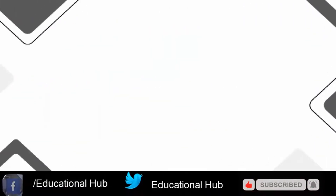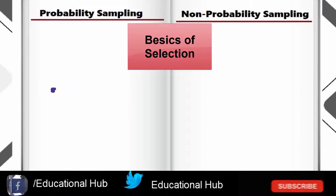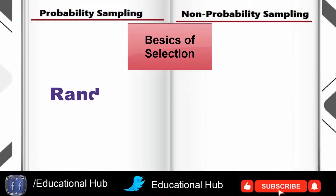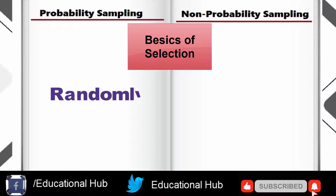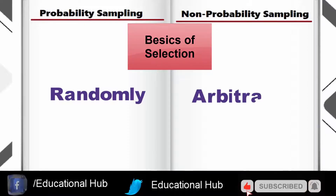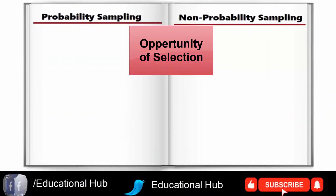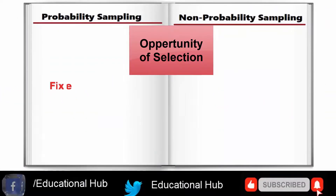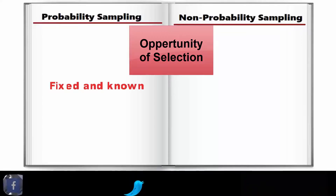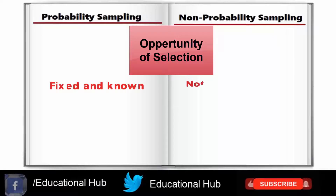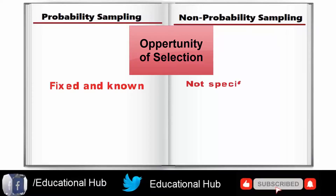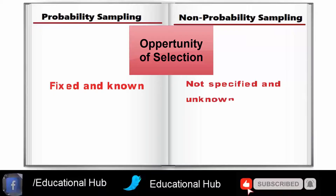3. Basis of selection: in probability sampling, the sampler chooses the representative to be part of the sample randomly, whereas in non-probability sampling, the subject is chosen arbitrarily. 4. Opportunity of selection: the chances of selection in probability sampling are fixed and known, as opposed to non-probability sampling, where the selection probability is zero — that is, it is neither specified nor known.